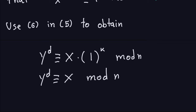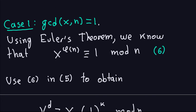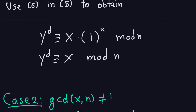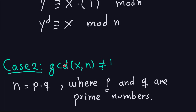In the last video, I ended up proving that y to the e is congruent to x modulo n. That's what we wanted to prove — that when you take the ciphertext y and take it to the d power, that gives you back the plaintext. Now, that proof depended on the fact that GCD(x, n) was equal to 1. There's another case when that is not equal to 1, and that's the one we're going to consider now. So I'm going to go into the second case.